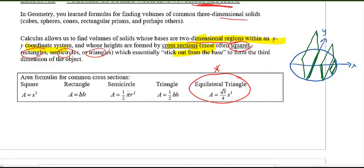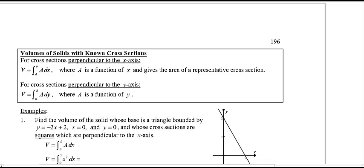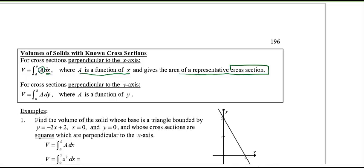To figure out the volume using calculus, it's the sum of all the cross sections, and that's what this formula represents. V, the volume, equals the integral from a to b of capital A, where A is a function of x giving the area of a representative cross section. If it's a square, then it's s squared; a rectangle is width times height; a triangle is base times height divided by 2. This is in terms of dx when slices are vertical along the x-axis. But like in area questions, we can slice horizontally in terms of dy, perpendicular to the y-axis.